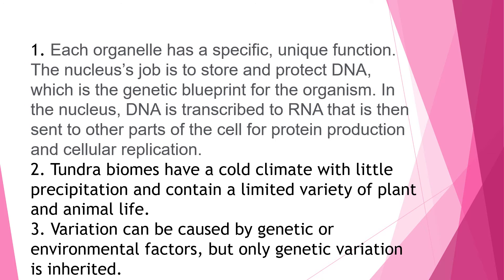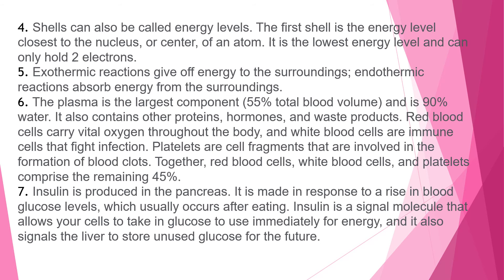Explanation 3: Variation can be caused by genetic or environmental factors, but only genetic variation is inherited. Explanation 4: Shells can also be called energy levels. The first shell is the energy level closest to the nucleus — it is the lowest energy level and can only hold two electrons. Explanation 5: Exothermic reactions give off energy to the surroundings, while endothermic reactions absorb energy from the surroundings.